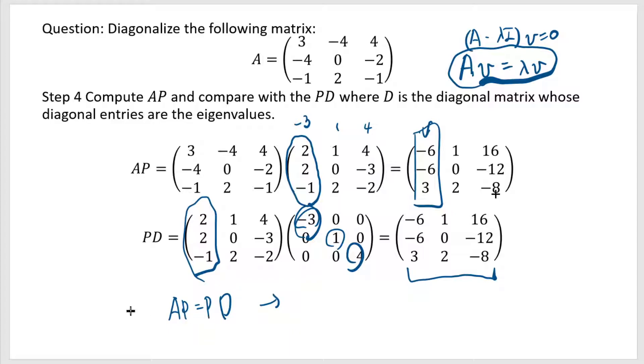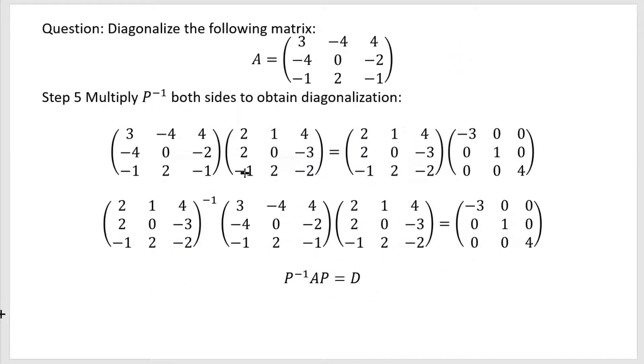And therefore, if you multiply P inverse both sides, these two will cancel, and you end up with P inverse AP equals a diagonal matrix. So in our specific case, we have proved that there's identity between these two, and this is our matrix P. And if you take the inverse of this, you get P inverse A times P equal to this diagonal matrix, and we have finished the diagonalization.